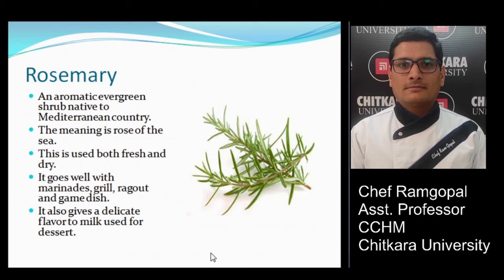Rosemary is popularly used in continental cuisine. It is an aromatic evergreen shrub native to Mediterranean countries; the meaning of rosemary is 'rose of the sea.' It is used both fresh and dried. It goes well with marinades, grills, ragù, and game dishes. It also gives a delicate flavor to milk when used in desserts, and pairs well with potatoes and lamb.